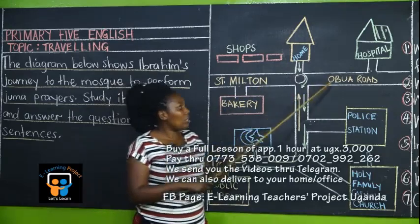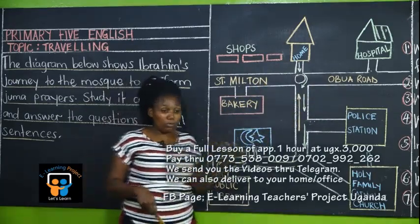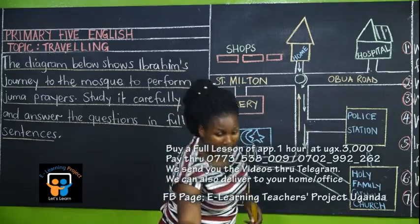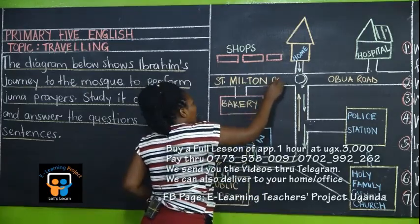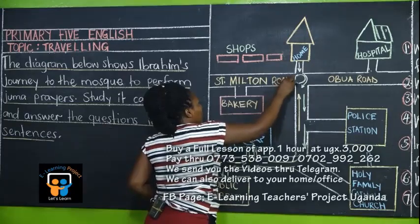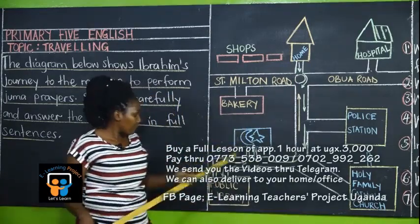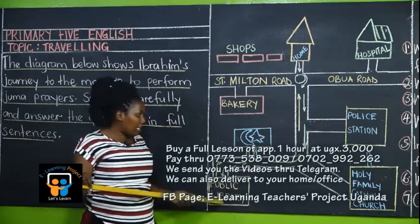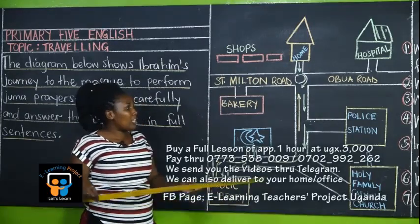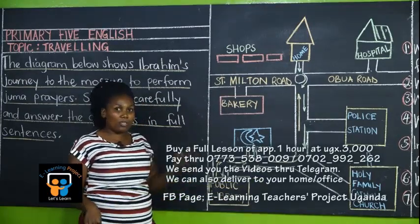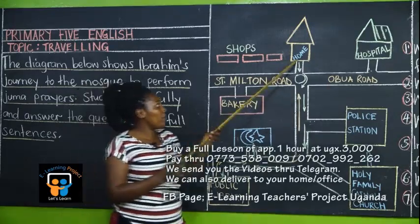Saint Milton Road — this is Saint Milton Road. Saint Milton Road Public Library. So let us look at movements, let us look at the journey of Ibrahim from home.